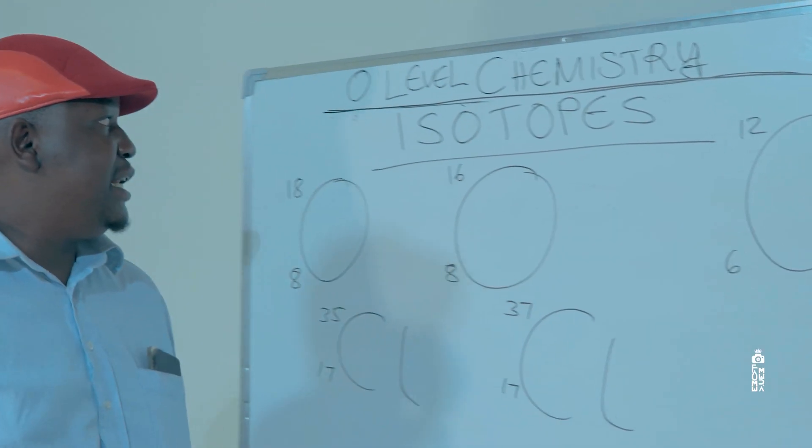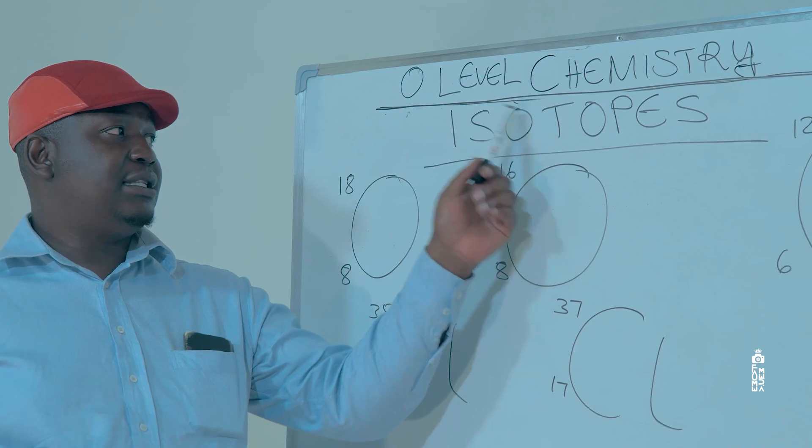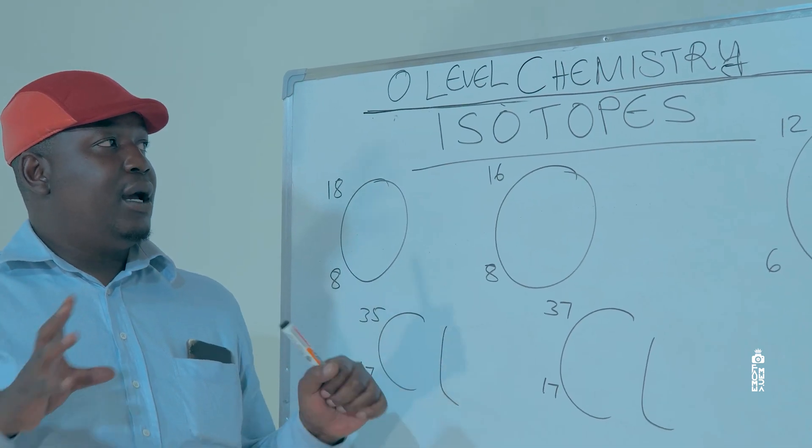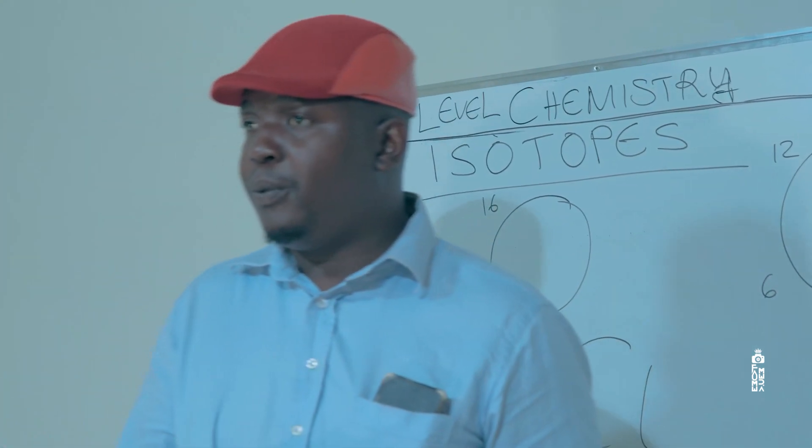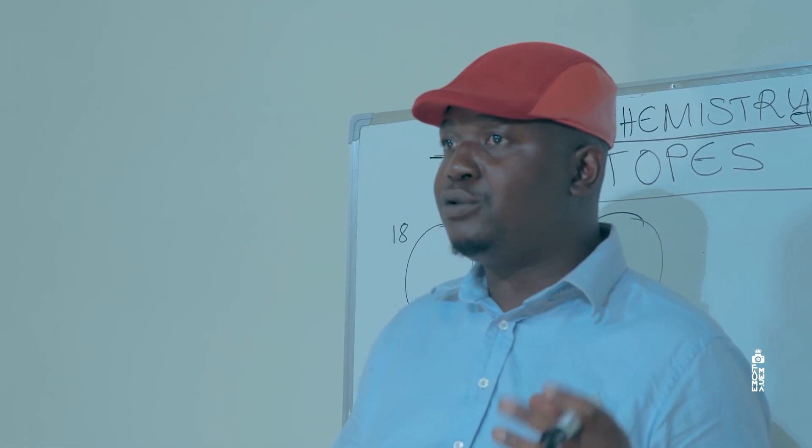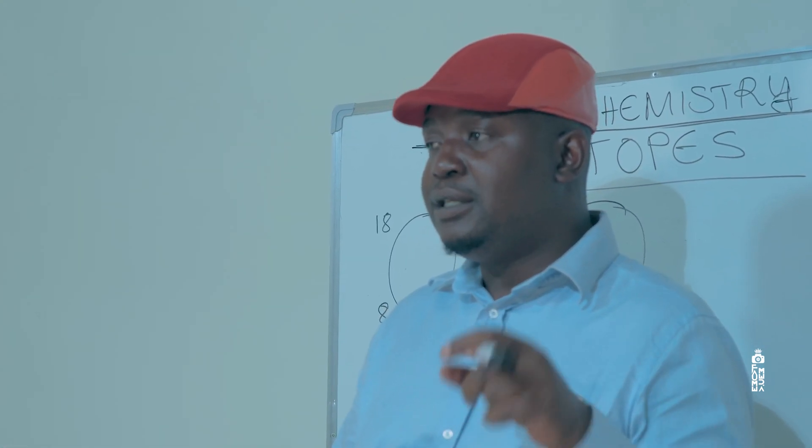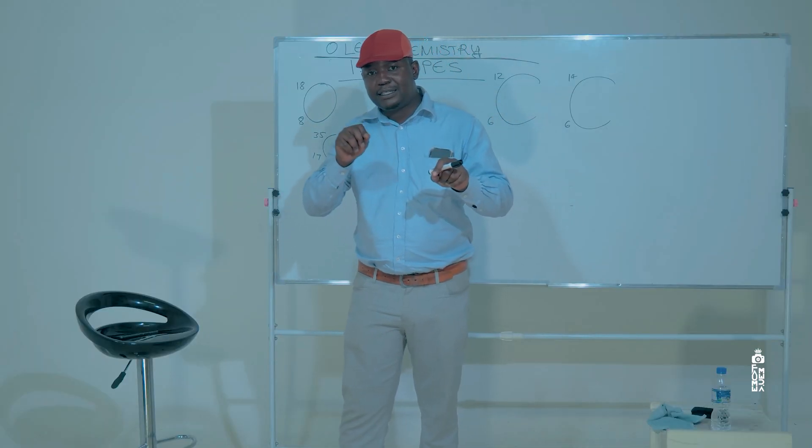The word iso in Greek means the same. However, in chemistry, when we're defining an isotope, we're talking about different atoms of the same element.